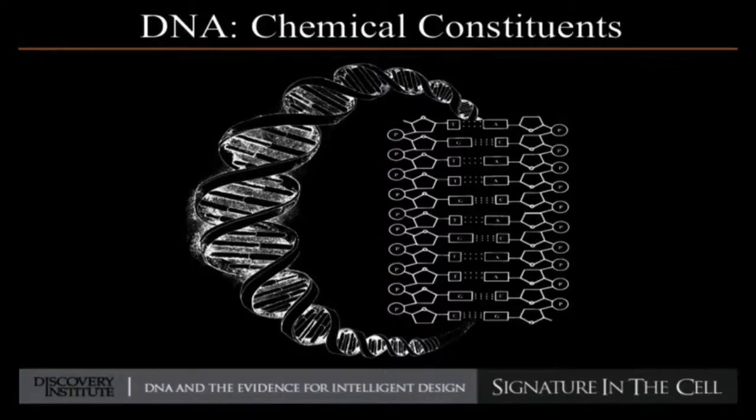Famous chemist Michael Polanyi — a friend of Einstein's who nearly won the Nobel Prize — wrote two brilliant articles in the 1960s pointing this out: 'Life Transcending Physics and Chemistry' and 'Life's Irreducible Structure.' He made the point that the information in DNA is no more the result of the chemistry of the bonding of its constituent parts than the information in a newspaper headline is the product of ink bonding to paper. Ink does bond to paper, but the information is provided by — as Polanyi put it rather coyly — an exogenous source: something outside of physics and chemistry. So what could that be?